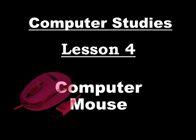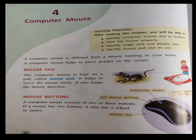Computer studies, lesson 4: the computer mouse. Lesson objectives — after reading this chapter you will be able to identify the computer mouse and its buttons, learn to hold the mouse properly, identify single click and double click, and identify the mouse pad and its use.